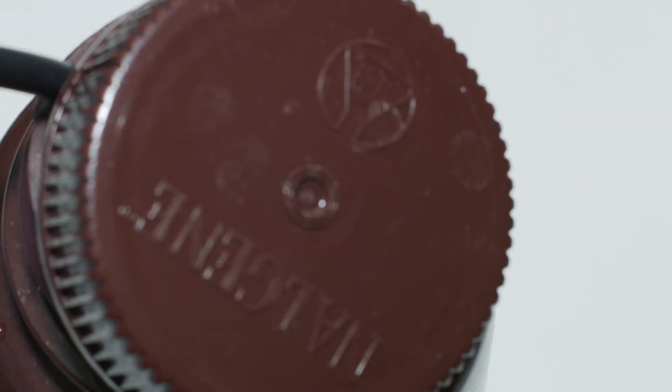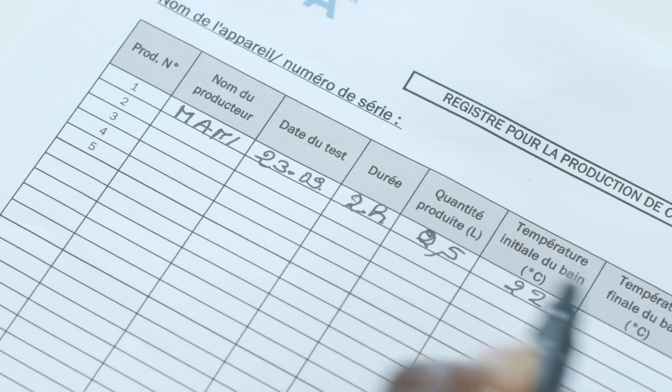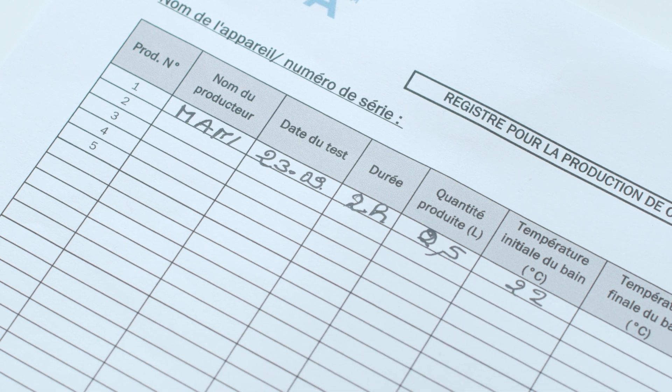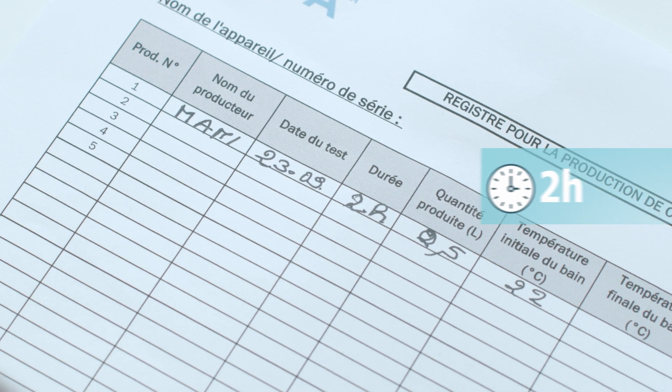Don't forget to keep a record in the logbook. Note down the time and calculate the time needed to get 2 hours of production.